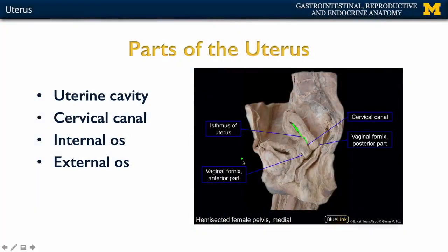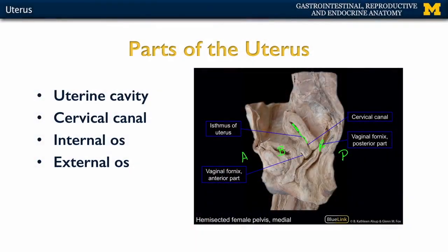I want to talk about the organization of the uterus in relation to the bladder and the rectum. Looking here, this is going to be more anterior and this is going to be more posterior. The uterus is right here in the middle, with the bladder located here and the rectum located here. Dependent on how full the bladder is, that can change the position of the uterus. Note that the majority of the body — in particular the fundus — is going to be tilted more anteriorly.